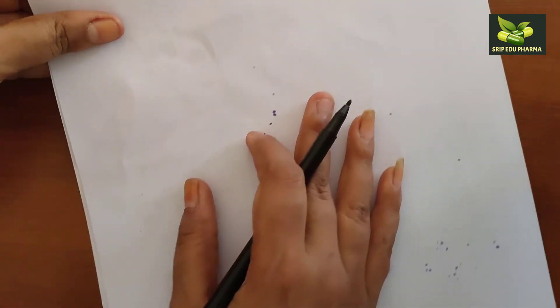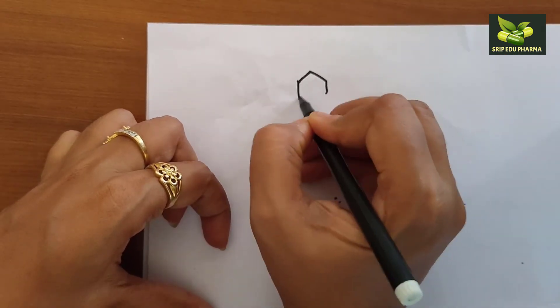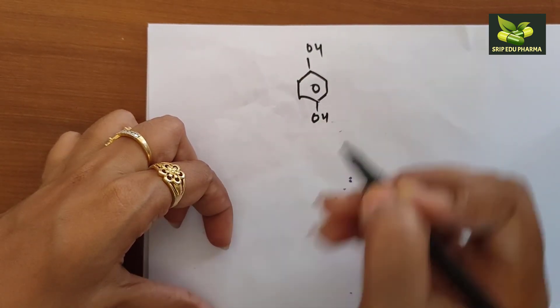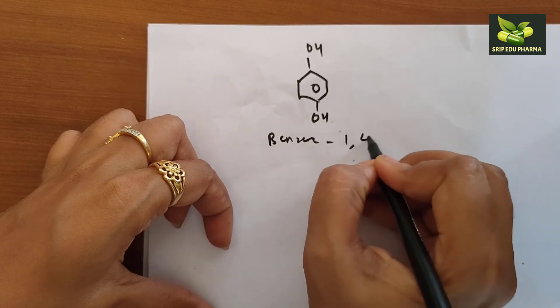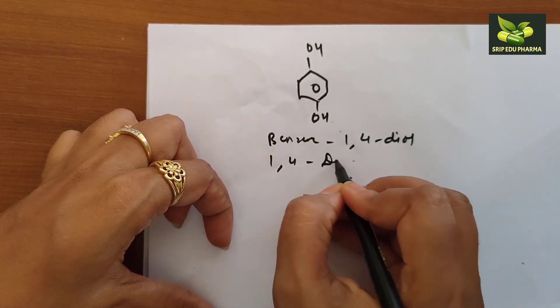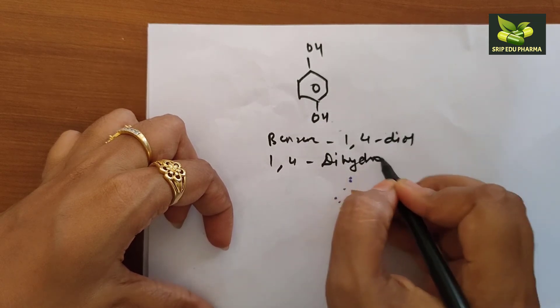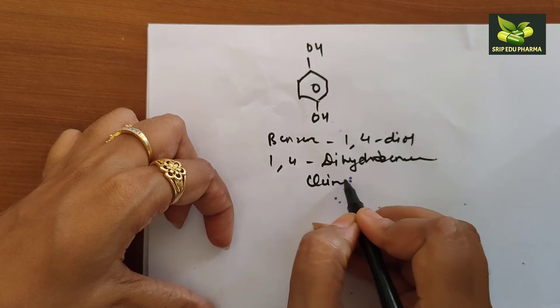Another example. Today we are practicing a bit. One more example. This is OH, this is OH. I think you can tell. This is called benzene 1,4-diol, or 1,4-dihydroxybenzene. Its common name is hydroquinone.